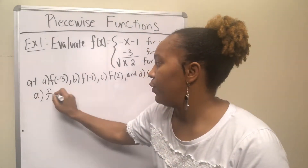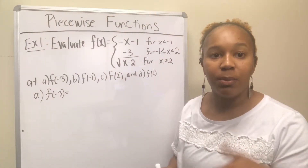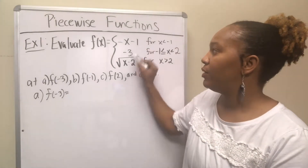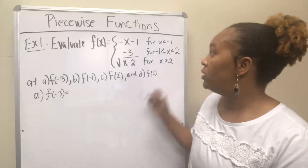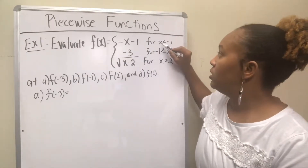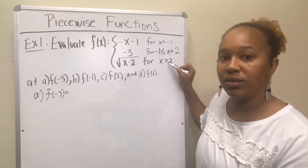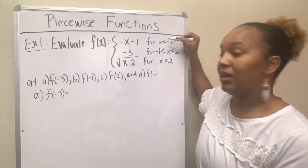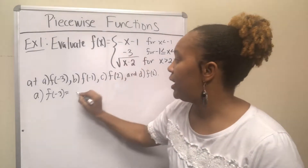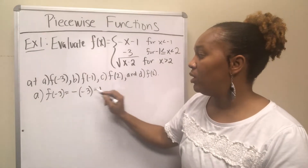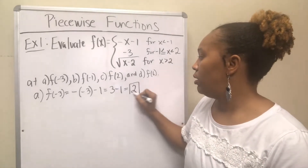Starting with f(-3): recall that a function has one output for each input, so I don't plug negative 3 into all of the functions. I need to figure out which piece it belongs to based on the restrictions. Negative 3 is less than negative 1, so I use the first function, negative x minus 1. Replacing x with negative 3 gives negative negative 3 minus 1. Two negatives become a positive, so 3 minus 1 is 2. Therefore f(-3) equals 2.